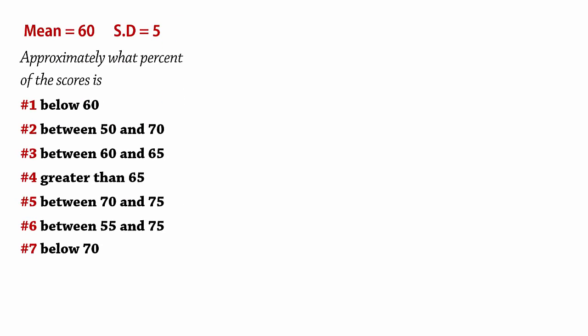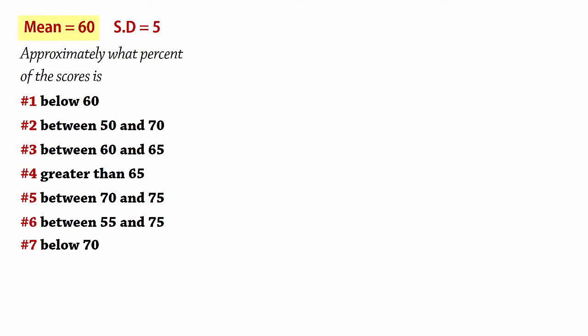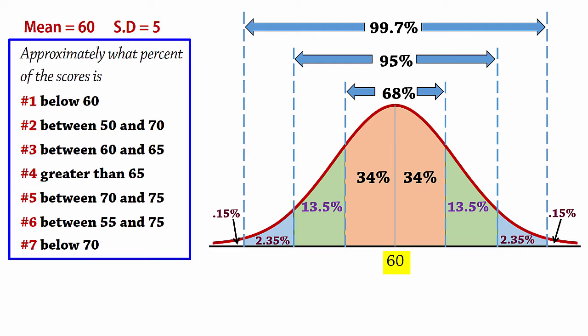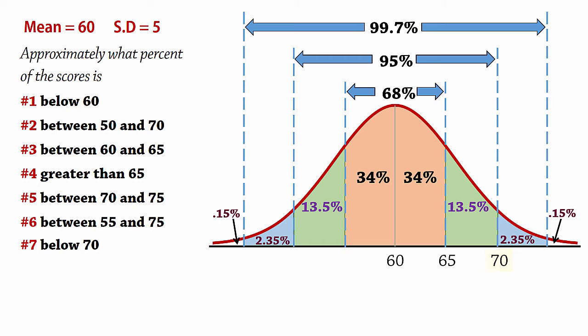Now suppose we have a bell-shaped distribution with a mean of 60 and a standard deviation of 5. We want to answer the following questions. Since the mean is 60, one standard deviation above the mean is 65, two standard deviations is 70, and three is 75.